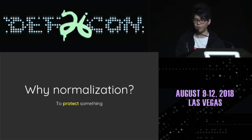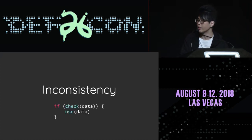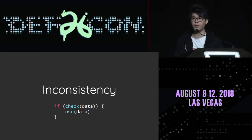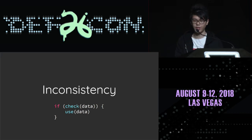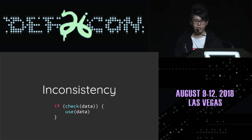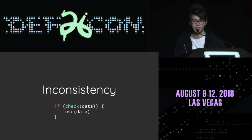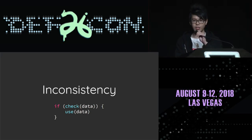So what's wrong with normalization? Inconsistency. In fact, this process is a typical dangerous pattern and easy to find problems on. The behavior in check must be the same as the behavior in use — otherwise the check function will be bypassed. It's just like my SSRF talk last year, finding inconsistency between URL parsers and URL fetchers that led to whole SSRF bypasses. So for the past two years, I've paid more attention on bug inconsistency.